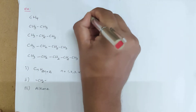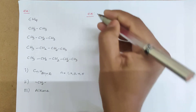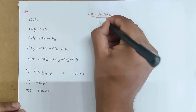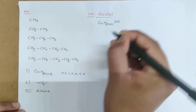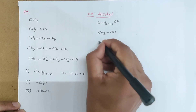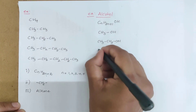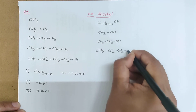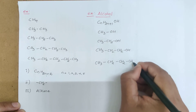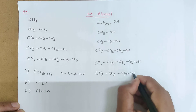Sometimes they may ask: write the homologous series of the alcohol family. The alcohol family has the general formula CnH2n+1OH. If n is equal to 1, we get CH3OH. The next member — we just add one CH2, because successive members differ by CH2. So the next is CH3CH2OH. The third member adds one more CH2: CH3CH2CH2OH. Then the next is CH3CH2CH2CH2OH, and so on.